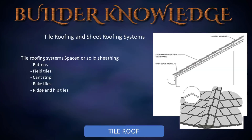Now let's cover tile roofing systems. Tiles are placed on spaced or solid sheathing that conforms to building code requirements for anticipated loads. Spaced sheathing normally requires a minimum of one-by-six spanning a maximum of 24 inches between rafters. Underlayment material must be at least number 30 asphalt-saturated felt installed with a minimum two-inch head lap and six-inch side lap.